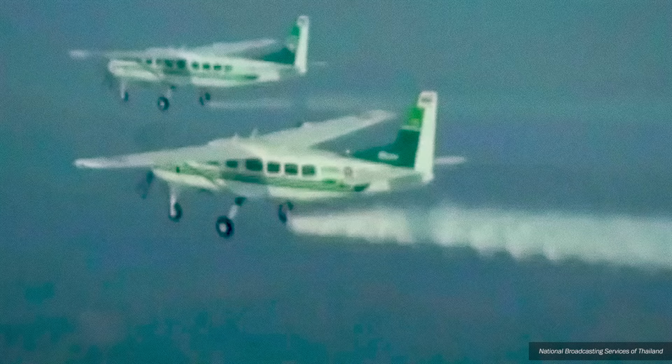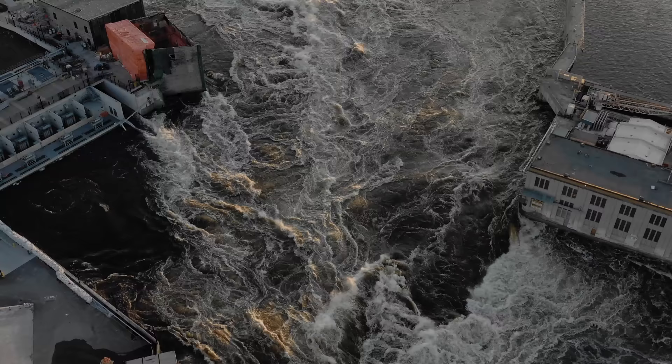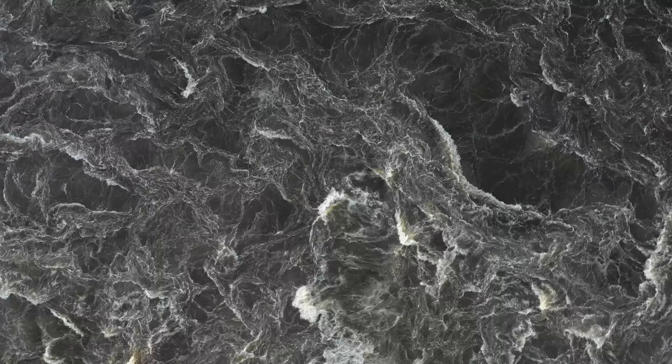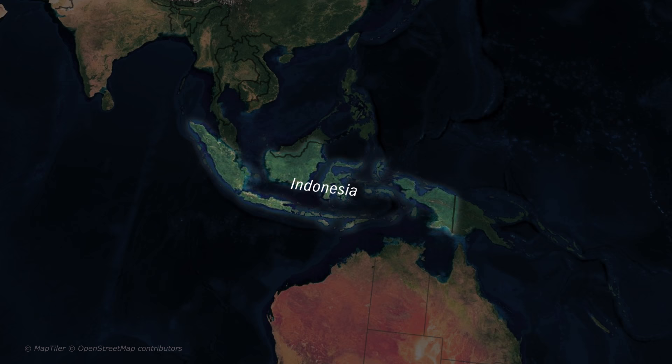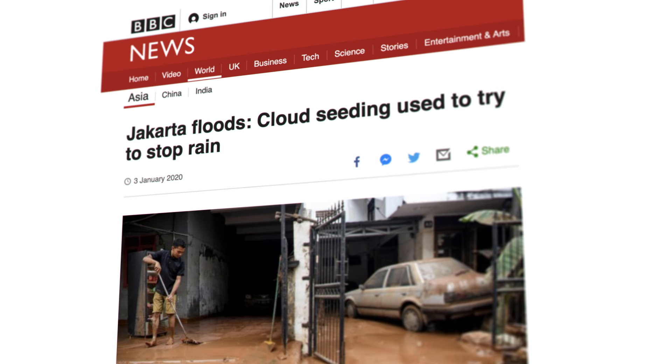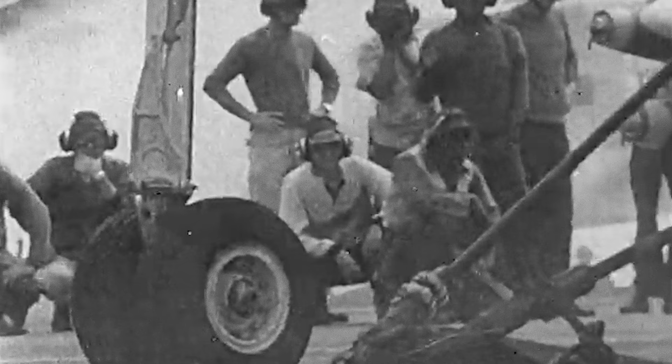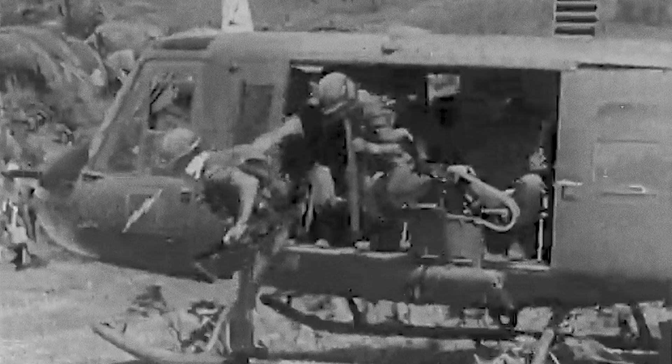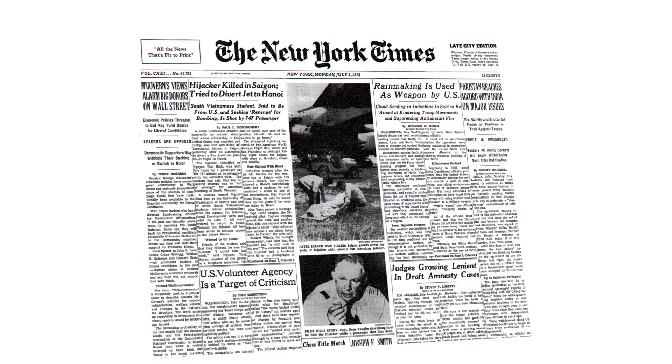At the same time, cloud seeding is also used to minimize extreme floods. This is achieved by targeting clouds early when such floods are predicted, as happened in early 2020 in Indonesia after a storm flooded large parts of Jakarta. But there was also a time where cloud seeding was used for a very different goal — using the weather as an advantage during war. This is what happened during the Vietnam War as part of a secret US tactic, Operation Popeye.